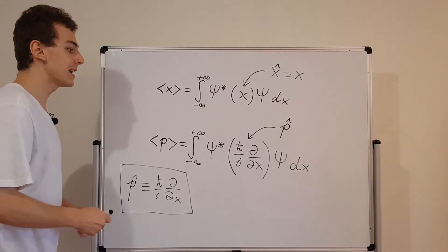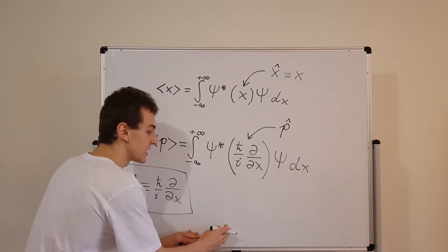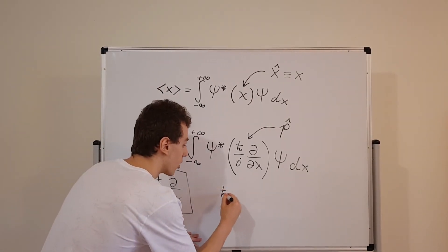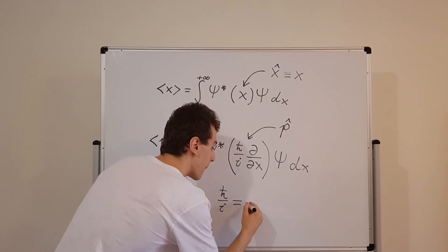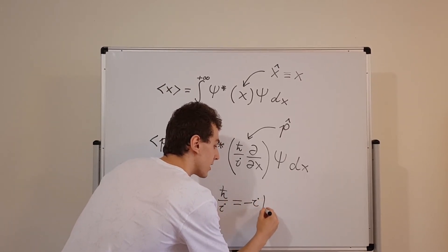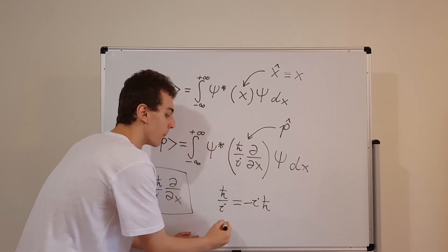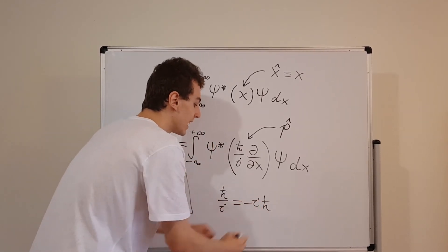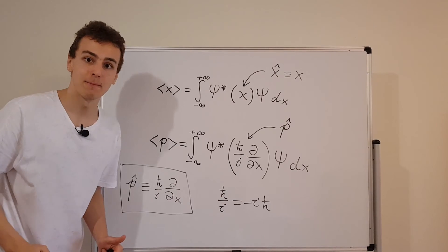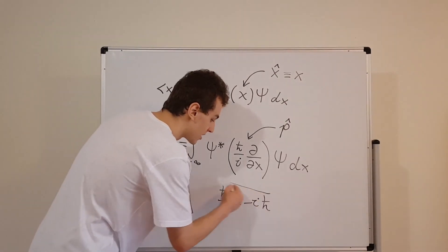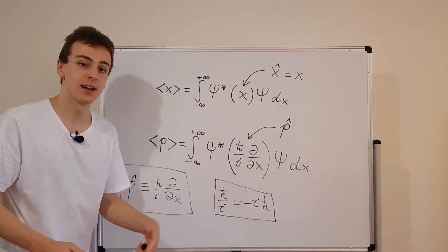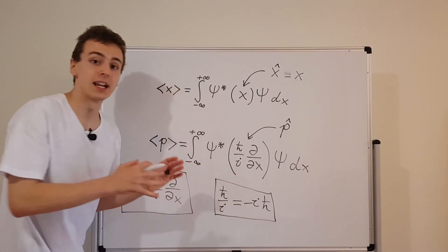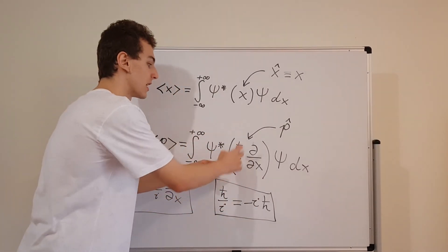One little clarification I want to make is that sometimes you'll see this written in the form h bar over i, but this is actually equivalent to minus i times h bar. Because multiplying by negative i is the same as dividing by i. So this is a thing to know. Sometimes you'll see minus i, and sometimes you'll see 1 over i. Just know that this is actually an equivalent form of this constant that goes out the front.